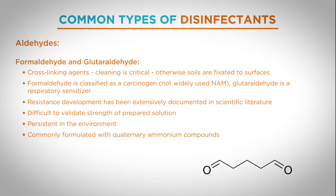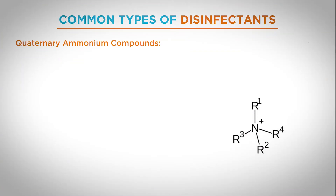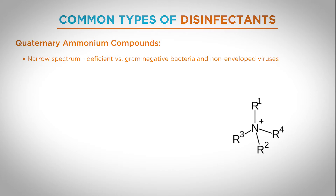An important class of disinfectant actives are quaternary ammonium compounds, or QUATs. QUATs have a relatively limited spectrum of activity. They have a well-known deficiency against gram negatives and against non-envelope viruses. They are easily inactivated by soils and by anionic detergents, and they are prone to the development of resistance, especially by vegetative bacteria.